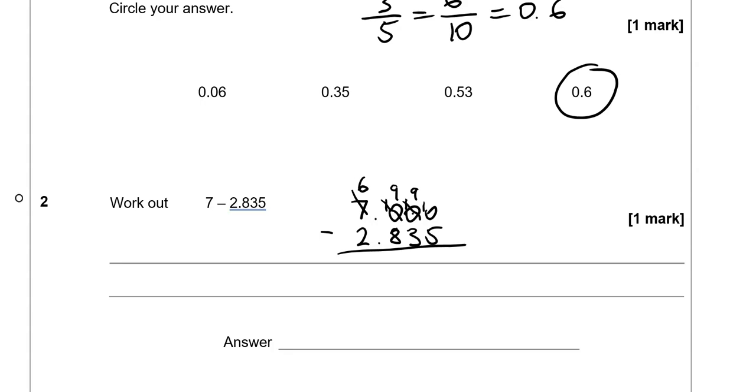So 10 take away 5 gives us 5. 9 take away 3 gives us 6. 9 take away 1, 6 take away 2 gives us 4. So the answer is 4.165.